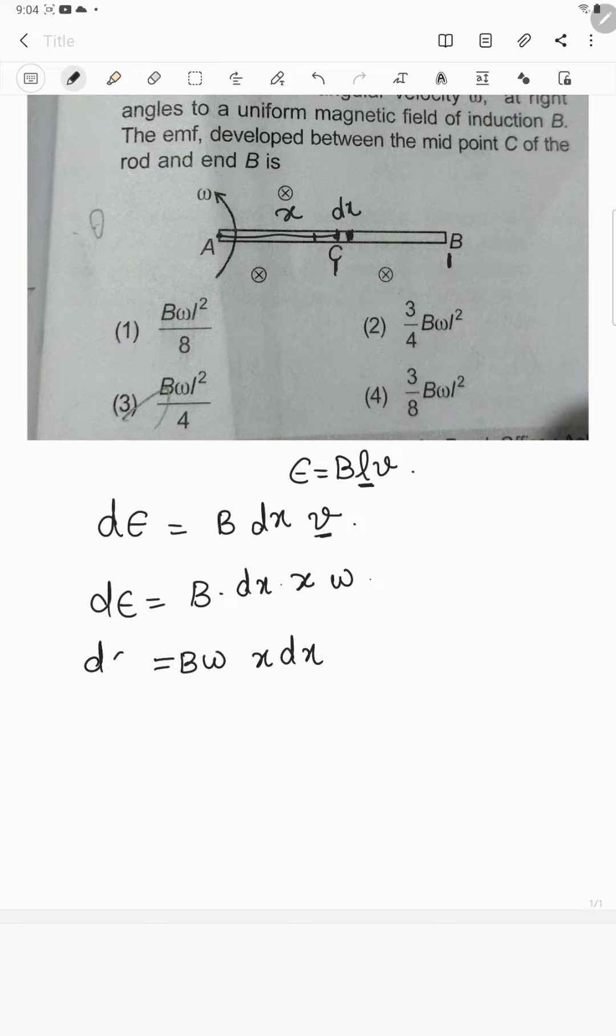This we have to integrate to calculate the total EMF. So integration of this over from C to B isn't it? So C is L by 2 length and B is L length and B omega into X DX.